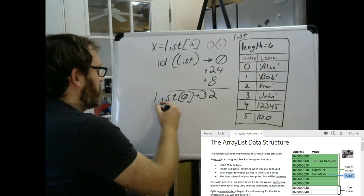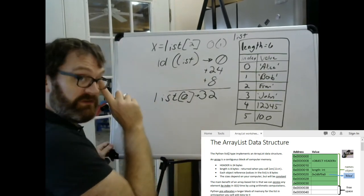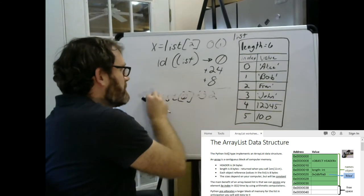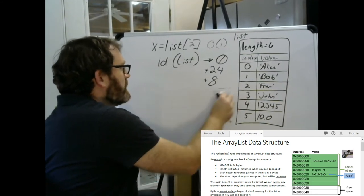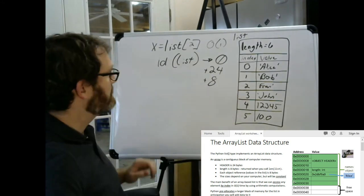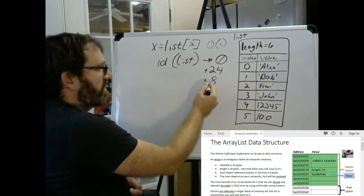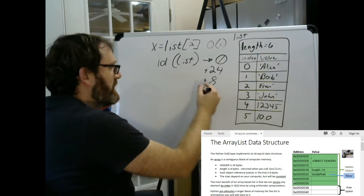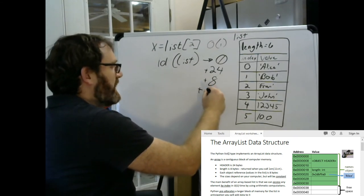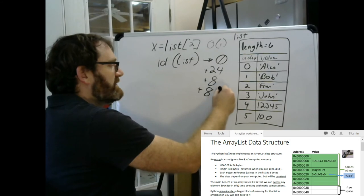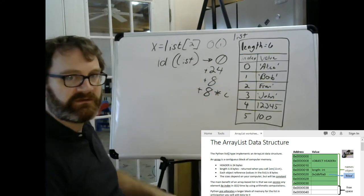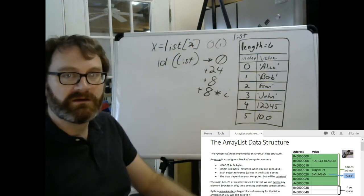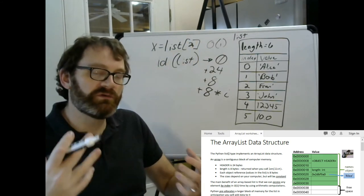So what I can do then is I can make a more generic formula that says we go from the ID of list plus 24 for the object header, plus 8 for the length of the list, plus 8 times the index. Whatever that index is. Here it's two. And that gives you the location in memory.